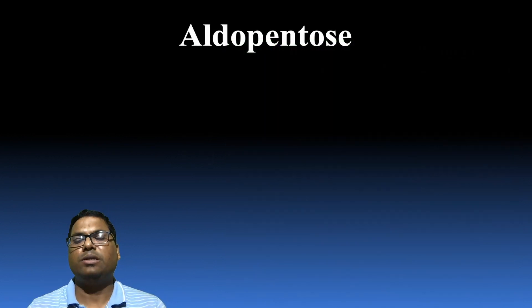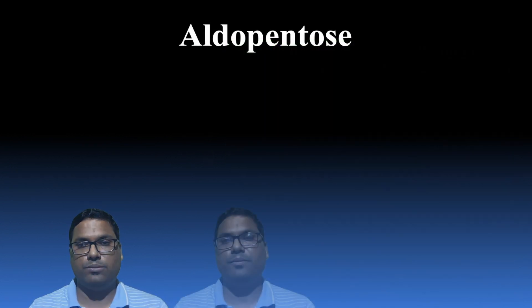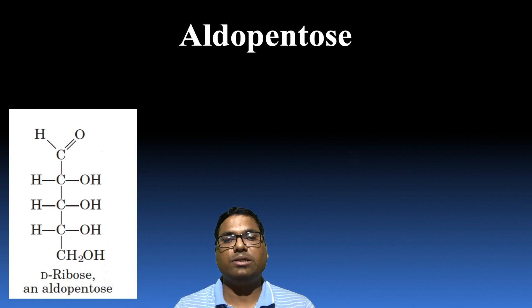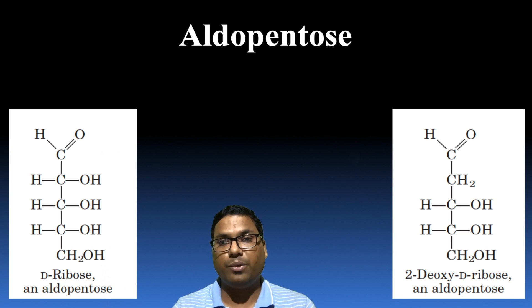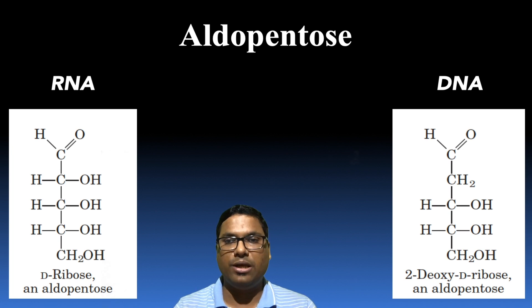Now let us see the example of aldopentose. The very first example of a sugar called ribose having five carbons, and the second example over here we are referring as 2-deoxyribose, which is again aldopentose. Now this ribose is present in the important nucleic acid called RNA, while this 2-deoxyribose is present in the very important nucleic acid called DNA.